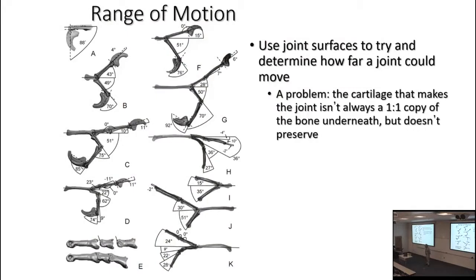One issue is trying to figure out the range of motion of different joints. You might think it's simple — you have the joint surface on one bone, its corresponding surface on another bone, and can approximate how far the joint can move. But it's worth noting that it's not bone-on-bone contact in healthy individuals — it's cartilage on cartilage covering the end of each bone. That's not always a one-to-one copy of the bone underneath, and since cartilage doesn't always preserve, it's difficult to say what the actual cartilage shape was that controlled range of motion.